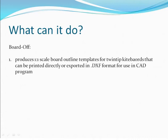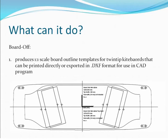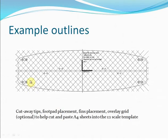Just to give you an idea of what the templates look like, this is one that I'm just starting to work on now, which will be a 130 by 41 sort of light wind freestyle board. You can see fin placements, foot pad placements, and in this case I've got a second deck going on top just to stiffen it up a little bit in the middle. This is another example of some of the features you can get with Board Off: cutaway tips, an overlay grid so that if you are printing it out on A4 sheets you've got a grid to line up the sheets, and positions for foot pad inserts.